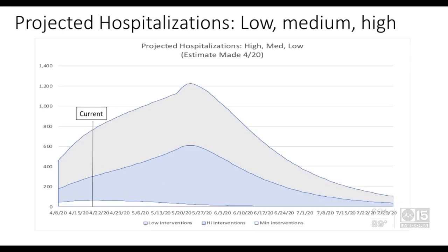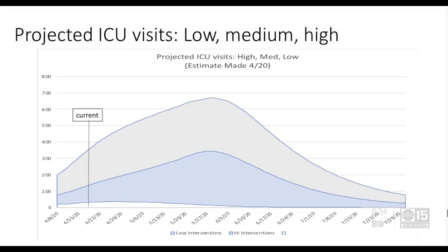They likely ran these through a simulation and came out with some projections showing that our COVID-19 cases can be as high as 40,000 and as low as 10,000. This is all projected for mid-May.